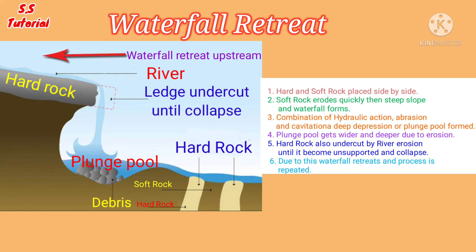When bands of hard and soft rock are placed horizontally, vertically, or diagonally side by side in the course of the river, due to a combination of hydraulic action and abrasion, soft rock erodes quickly and a steep slope forms. The river water descends vertically forming a waterfall, generating gravitational potential energy which erodes the river bed and bank quickly due to hydraulic action, abrasion, and cavitation. A deep depression forms at the base called a plunge pool, which gets deeper and wider as soft rock erodes, forming a cliff. The hard rock is undercut by erosion until it becomes unsupported and collapses into the plunge pool, where debris speeds up further erosion. Through repeated cycles, the waterfall gradually retreats upstream and forms a gorge.